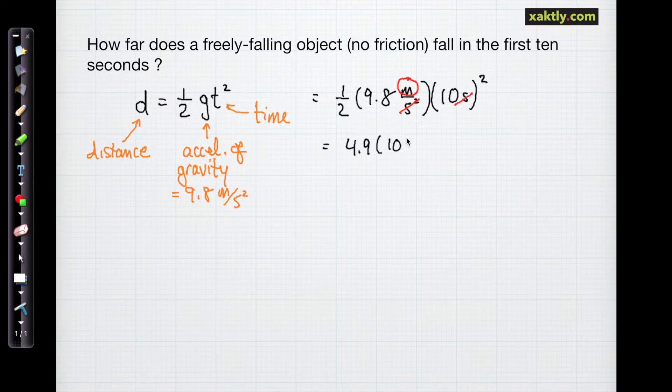And we're left with the units of meters, which we want. Let's see, half of 9.8 is 4.9. 10 squared is 100. So that should be 490 meters. So in the absence of any friction due to air resistance, a freely falling object will fall 490 meters in the first 10 seconds.